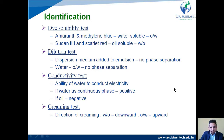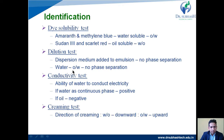The next test is the dilution test. An emulsion has two phases: the disperse phase and the dispersion medium. If we add the dispersion medium to the emulsion and there is no phase separation, it confirms the emulsion type. For example, adding water to an oil-in-water emulsion with no phase separation confirms it is oil-in-water. Adding oil instead causes phase separation.